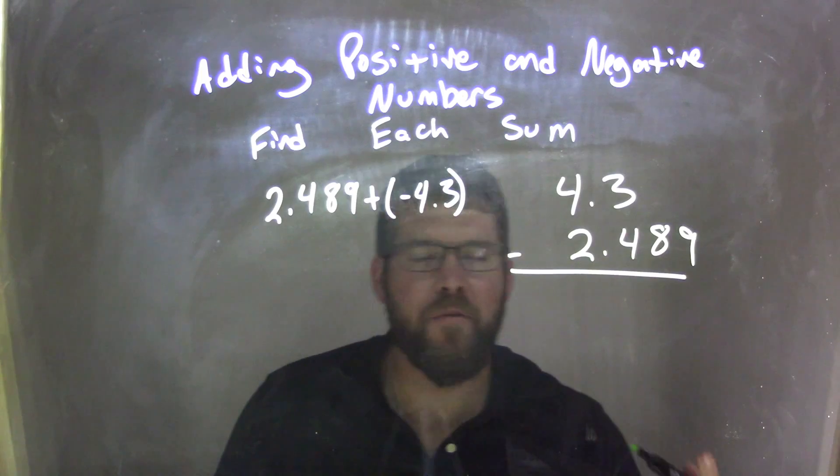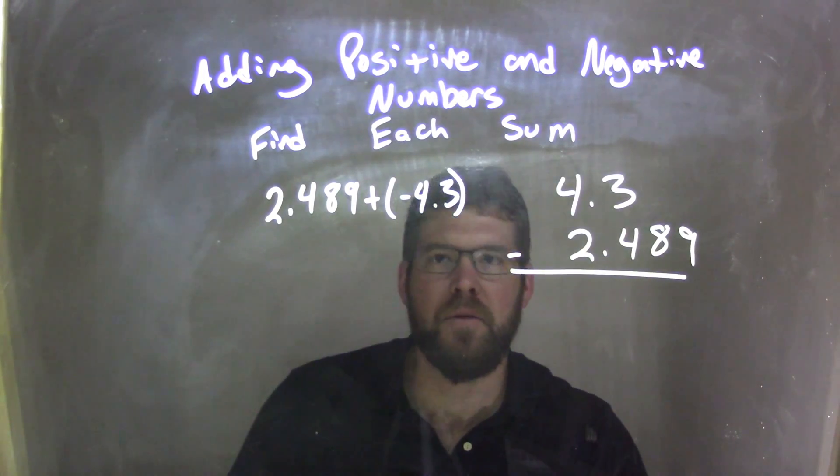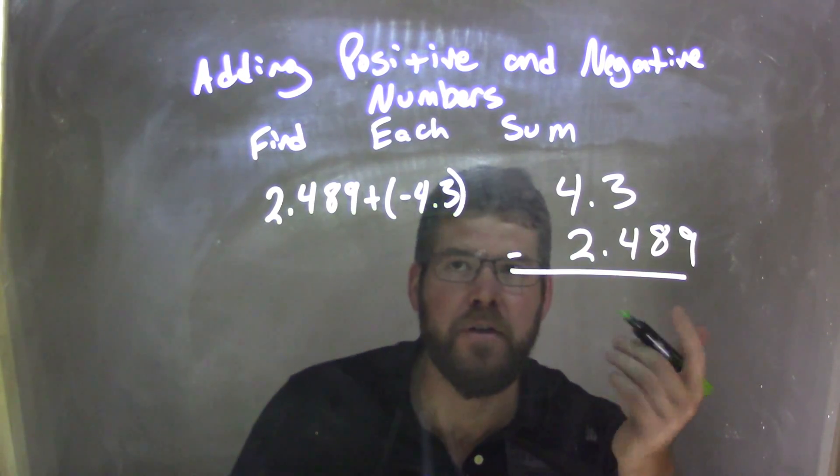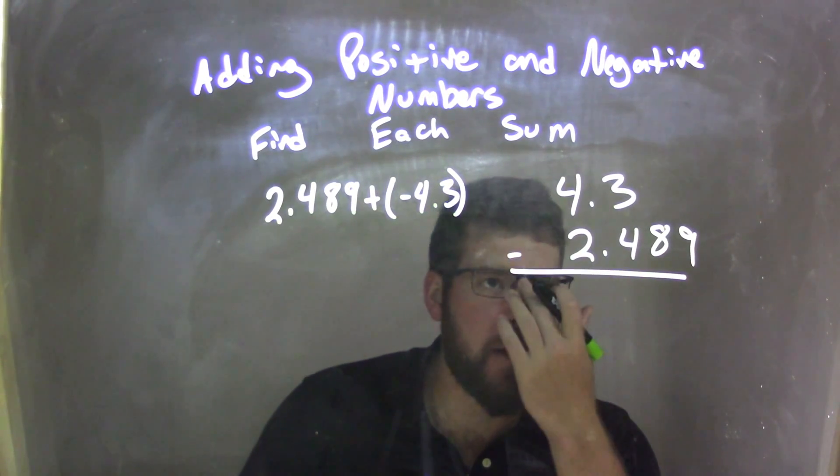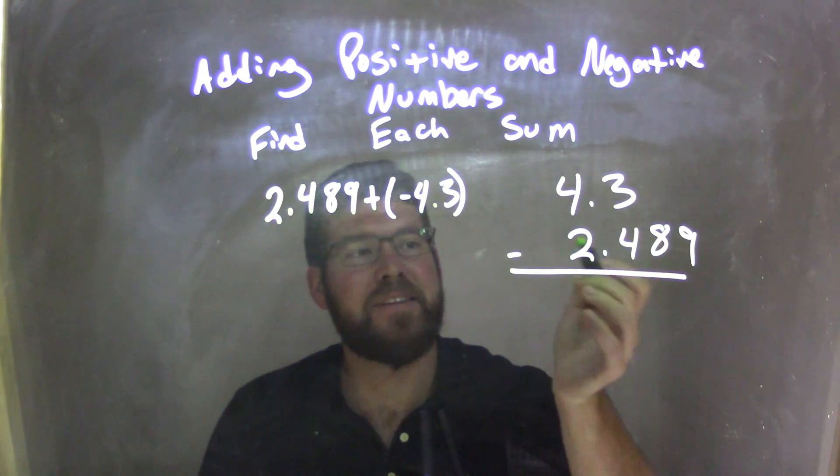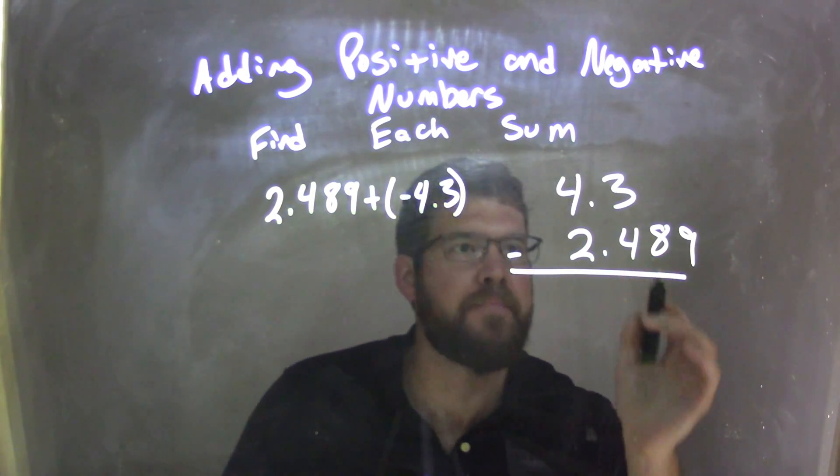But I know that whatever my final answer is in this case, I'm going to have to make it negative. So the way I set it up here is going to be positive, and I'm going to rearrange it to be negative at the end. I'm taking the 4.3 and subtracting the 2.489 from it.